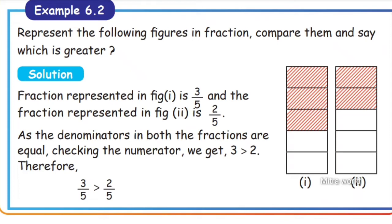For example, 3 by 5 and 2 by 5. Both denominators are the same. So we compare the numerators: 3 and 2. Since 3 is greater than 2, therefore 3 by 5 is greater than 2 by 5. First step: check if the denominators are the same.